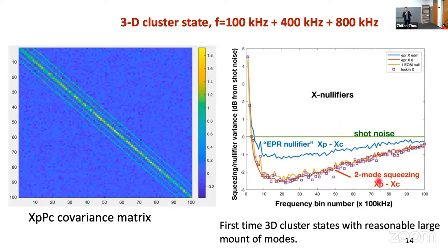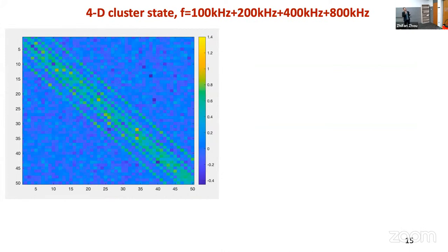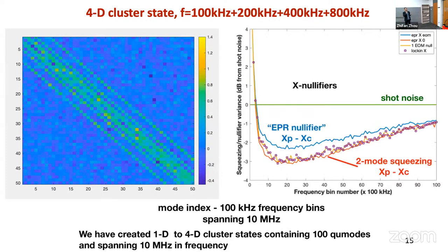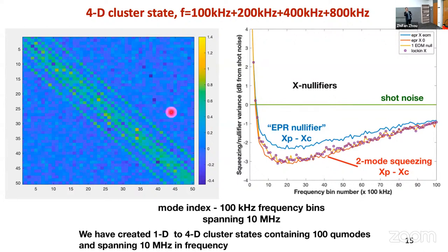With 100 modes, we need to think about what we can do with this three-dimensional cluster state. It's not hard to go further — here is our four-dimensional situation. We use four-frequency modulation to generate this entanglement structure, and the nullifiers are still working well. The distributed entanglement is not lost; it's just redistributed. In this way, we have created one- through four-dimensional cluster states containing hundreds of CV modes and spanning 10 MHz in frequency. We can go to even higher dimension, but we already need to think about what we can do with the four-dimensional situation.